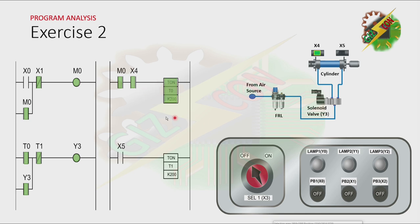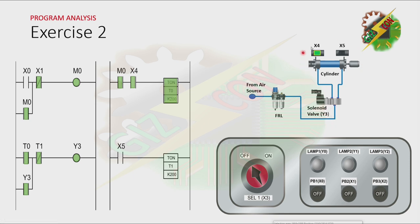And because timer T0 is now on, the normally open contact of T0 will turn on. And that will cause Y3 to turn on. Y3 will not turn off even if T0 is off, because there is a latching here. And because Y3 is on, the solenoid will turn on. And that will cause the cylinder to extend.